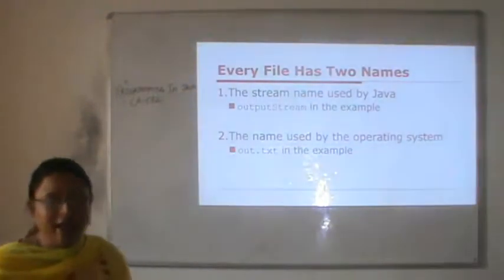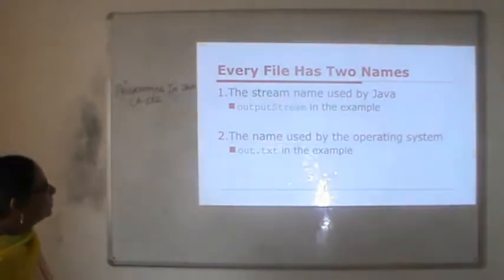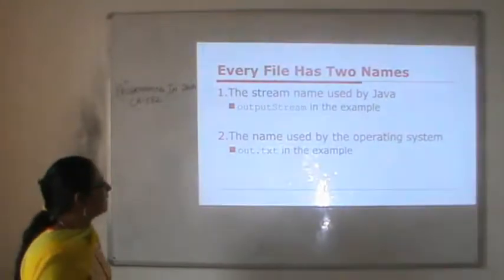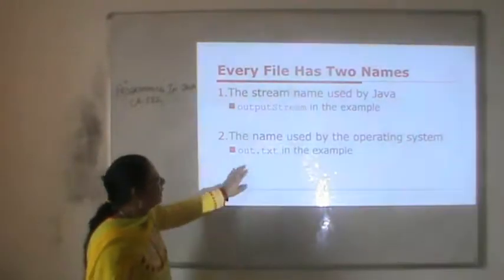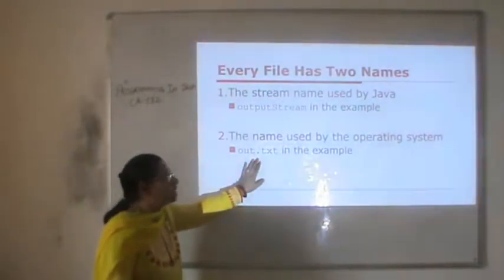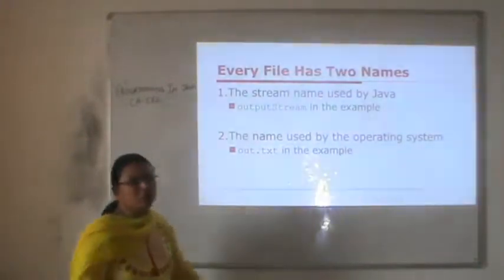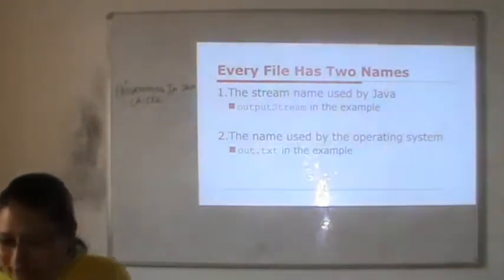Every file has two names: the stream name used by Java (for example, the output stream variable in the program) and the name used by the operating system (the actual text file on disk from which we want to read or write data).